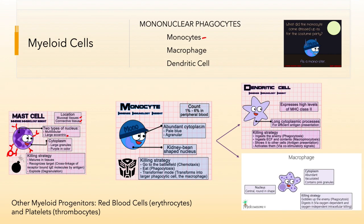Monocytes are found in peripheral blood in an immature state. They release chemokines and are phagocytic, but they mature first. If they remain in circulation after maturation, they become a dendritic cell. If they move into tissue, they become a macrophage. Which one they become depends on what cytokines and chemical signals the immune system is sending at the site of infection.